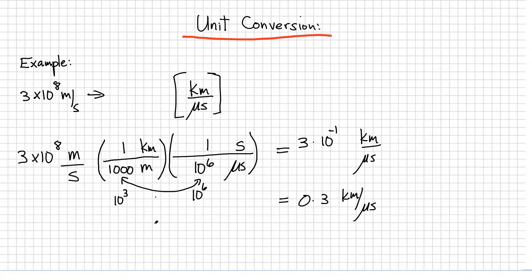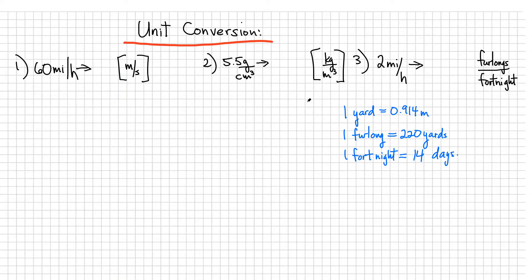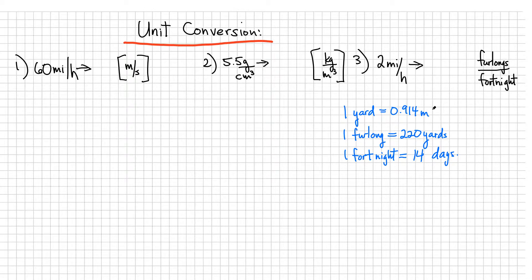Try out the bracket system — I've got three other examples. The first is convert 60 miles per hour into meters per second. The second is convert a density in grams per centimeter cubed to kilograms per meter cubed. The last one is the hardest: a snail moving at 2 miles per hour, convert it to furlongs per fortnight. I've given you some conversion factors you may need for this problem.